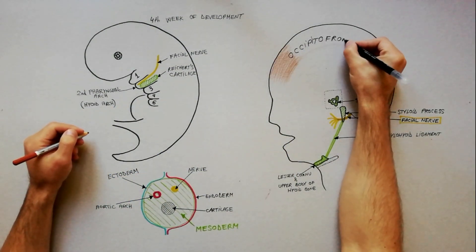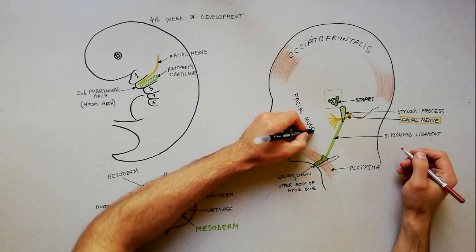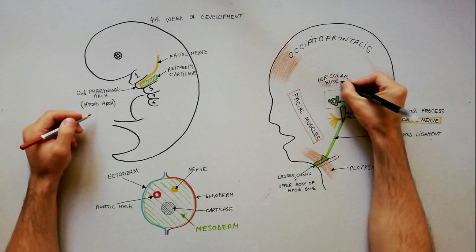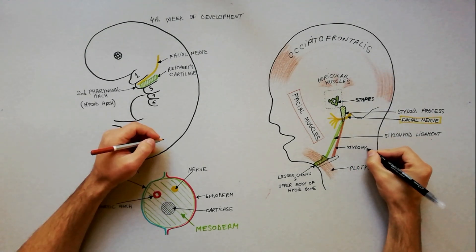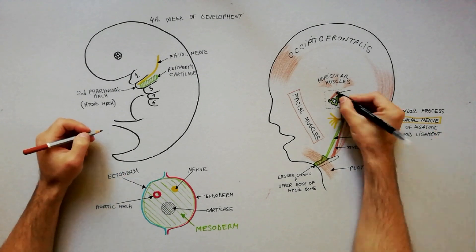occipitofrontalis muscle, platysma muscle, facial muscles, auricular muscles, stylohyoid, posterior belly of the digastric, and the stapedius muscle.